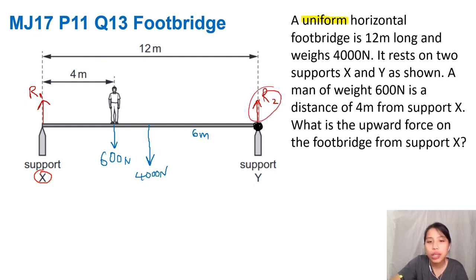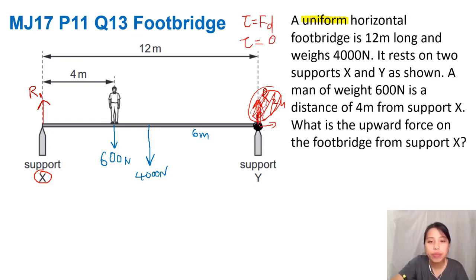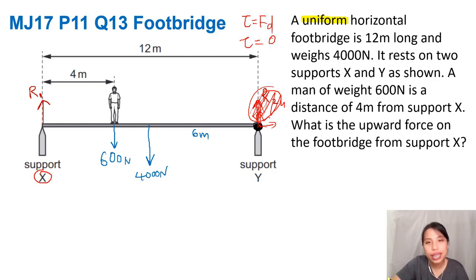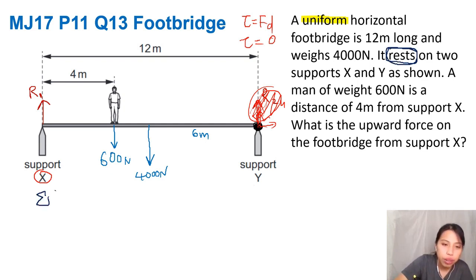A force acting on the pivot has no effect because torque equals force times distance, and if distance is zero, torque is zero. So all forces acting right at the pivot don't matter anymore — great, it simplifies things. Now think about the net torque. The system is at rest — that keyword is in the question — so net torque is zero.